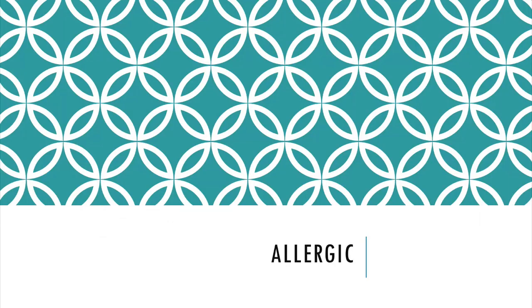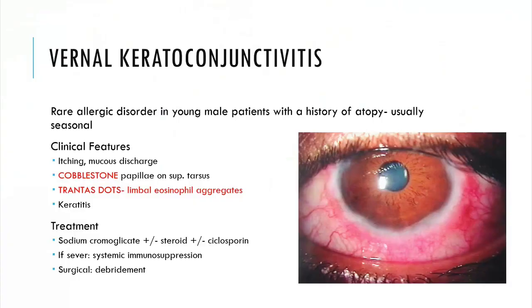Moving on to allergic conjunctivitis — specifically vernal keratoconjunctivitis or VKC. This is a rare allergic disorder usually in young male patients with a history of atopy, typically caused by seasonal allergens. Clinical features include the usual allergic conjunctivitis symptoms of itching and mucus discharge. However, as this is a severe form, there's cobblestoning of the superior conjunctiva — large papillae formed on the superior conjunctiva underneath the eyelid. There are also Trantas dots, which are limbal eosinophil aggregates around the cornea, and as with all types there can be corneal involvement.